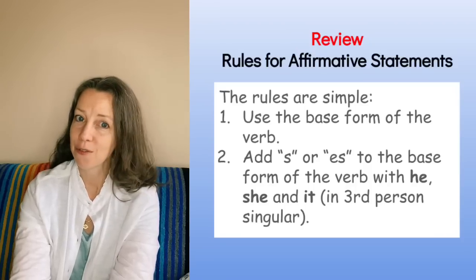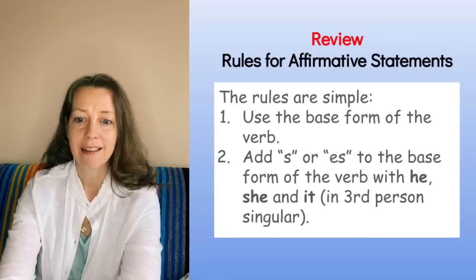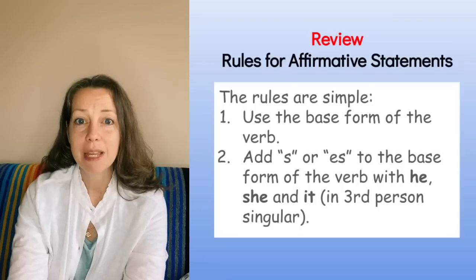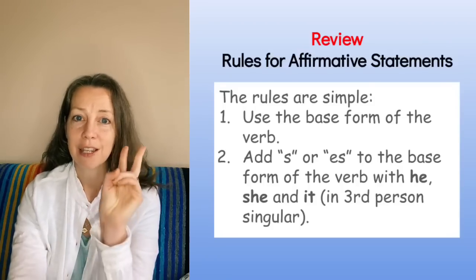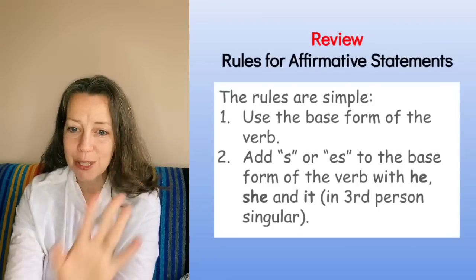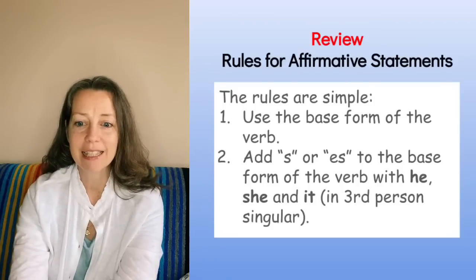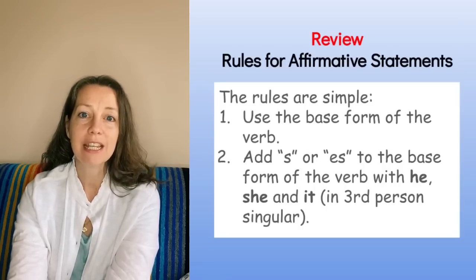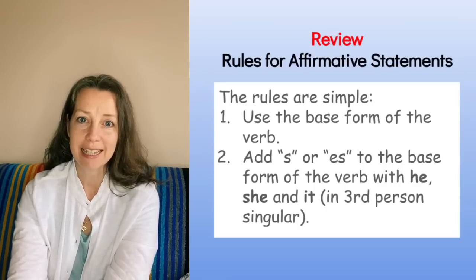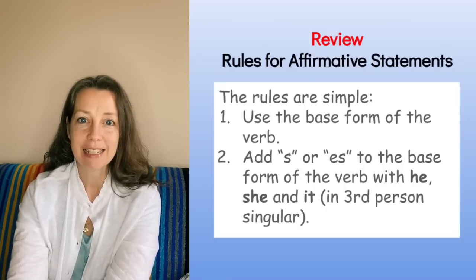The rules are simple. Number one: use the base form of the verb. Number two: add S or ES to the base form of the verb with he, she, and it — third person singular.